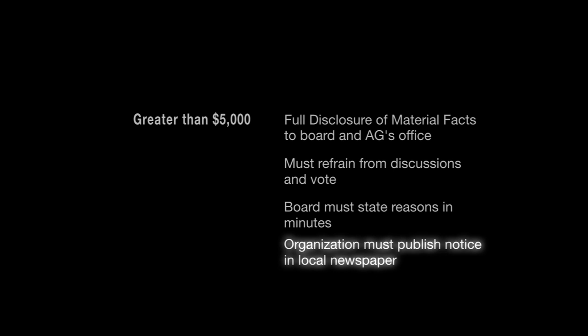What's the over $5,000 requirement — is that even tougher? If there is more than $5,000 in business in the year, then everything in the $500 to $5,000 level applies, but there is one additional requirement: the organization must publish a legal notice in a local newspaper. So to summarize: if the organization does over $5,000 in business with a person, they must disclose to the Attorney General's office and the Board, they must recuse themselves, the Board must publish in its minutes why it made its decision, they must publish it in a local newspaper, and it must pass with a two-thirds vote.